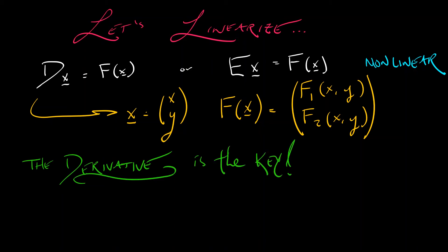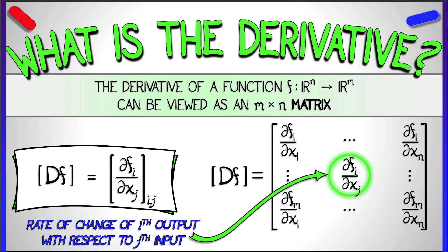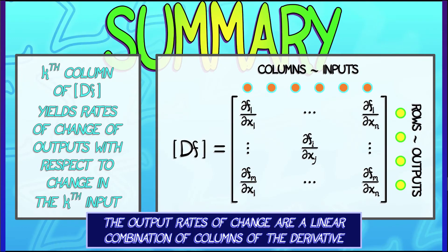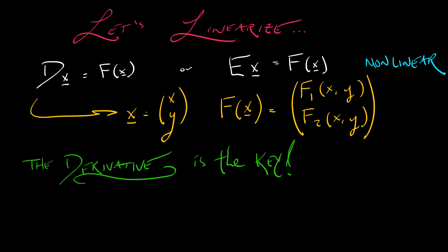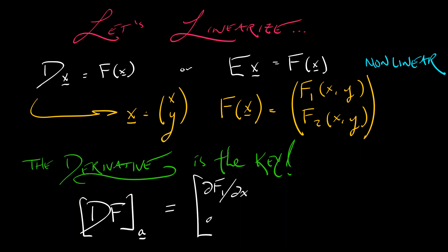We're going to work with derivatives of functions of two inputs to two outputs. Such a derivative is a linear transformation, as you learned back in multivariable calculus. The derivative is a linear transformation that transforms rates of change of inputs to rates of change of outputs. In the present context, these can be represented as a two-by-two matrix whose entries are the partial derivatives of the outputs with respect to the inputs.